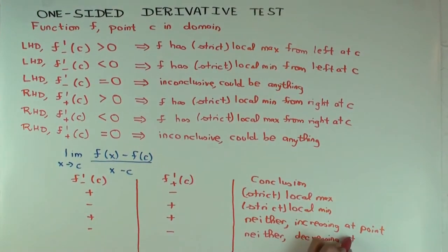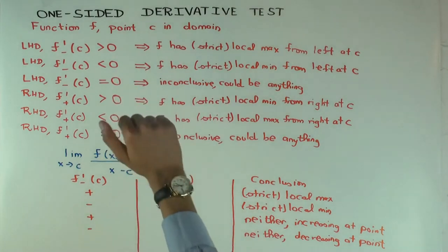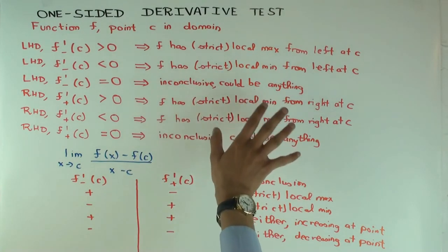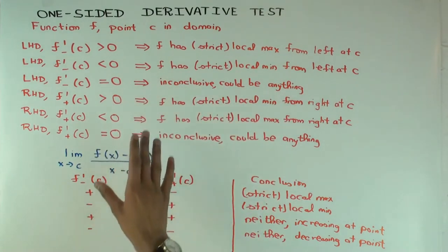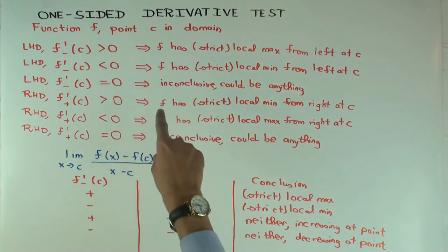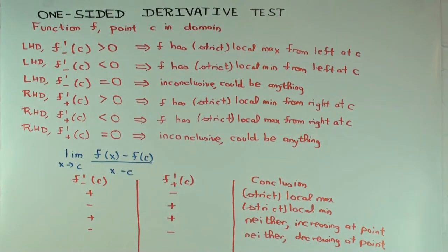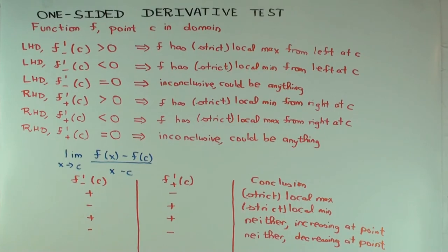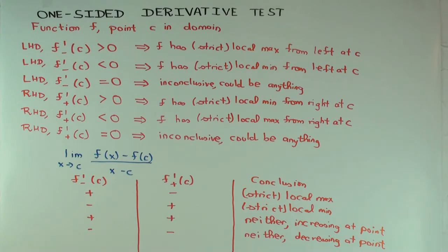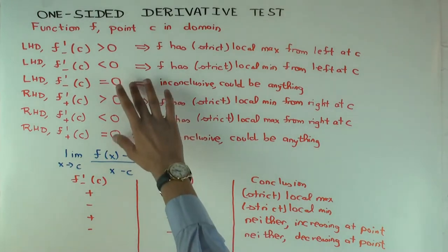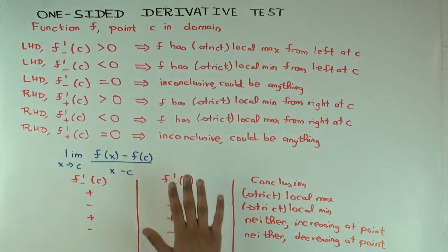How is this test different from the first derivative test? In the first derivative test you look at the sign of the ordinary two-sided derivative on the left or right of the point. Here you look at the sign of the one-sided derivative at the point. One key difference: if the derivative at the point is zero — which is the typical situation for differentiable functions at a critical point — then the one-sided derivative test is useless and gives no information.